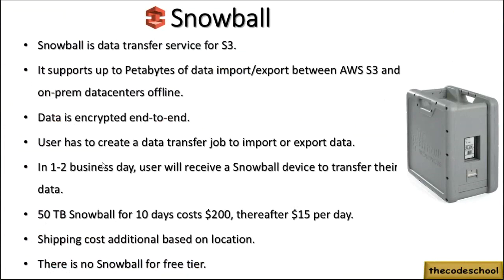Snowball comes with a built-in data encryption capability. The moment you connect it to your system and start copying, the data will be automatically encrypted. Once the Snowball reaches back to the AWS data center, they will plug it in and copy the data to your S3 bucket that you specified. All the information about which S3 bucket should receive the data will be collected. There is a system called Data Import Export which will be used. This is a very fast way to copy petabytes of data.